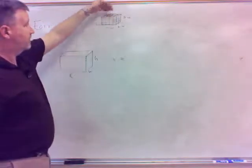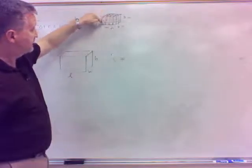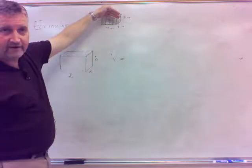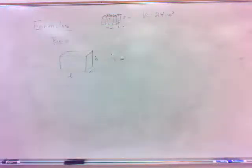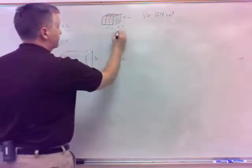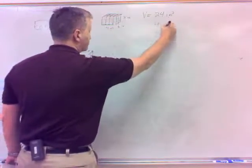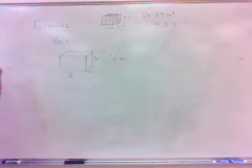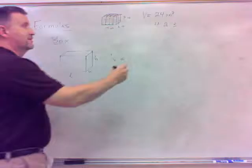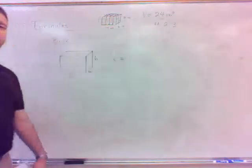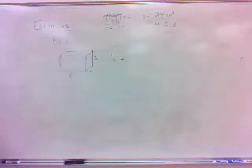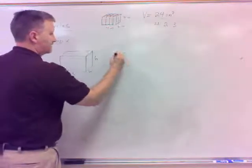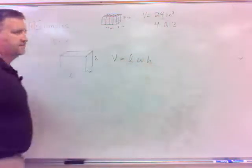The dimensions are four, two, and three — and four times two times three gives us twenty-four. So if you take the length times the width times the height, that gives you the volume. Volume for a box is length times width times height.